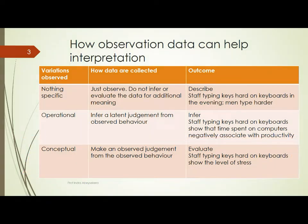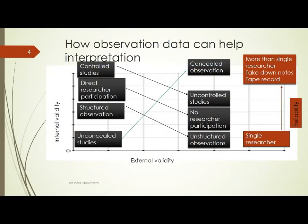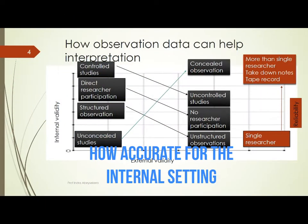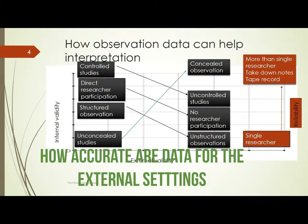So when we conduct and collect observation data, we have to be mindful of validity — internal validity and external validity. Internal validity is how accurate the data are in relation to the setting where the data was collected. External validity is how valid and how representative the data would be in relation to other settings.